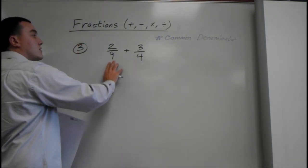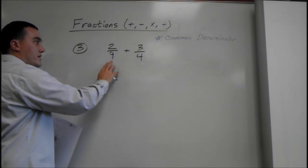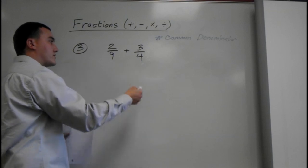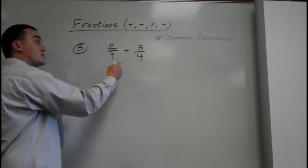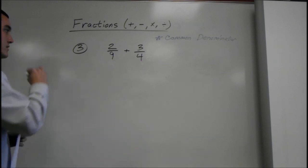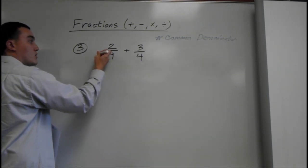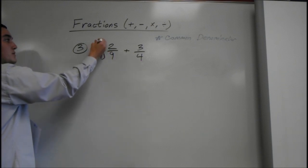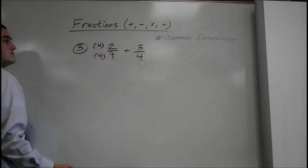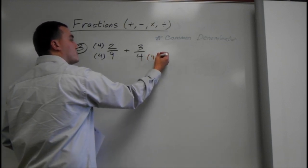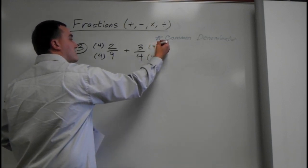So, 9 and 4. Let's think of multiples of 9 first. 9, 18. Well, 4 doesn't go into 18, so we have to keep going. 27, 36. 4 does go into 36, 9 times. Alright? So, what we're going to do is multiply this by a 4 because we know 4 times 9 is 36. Do it on the bottom. We have to multiply on the top as well. And we know 4 times 9 is 36. So, we're going to multiply this by 9 and 9.